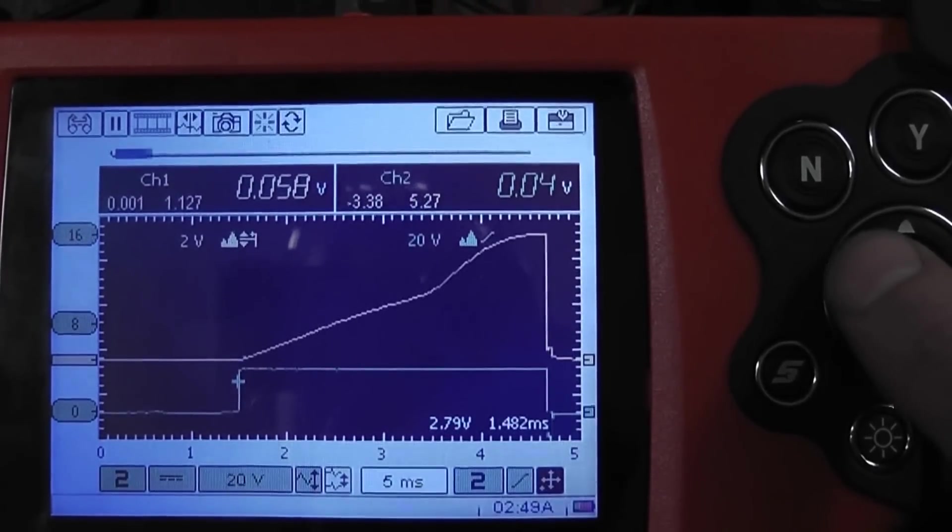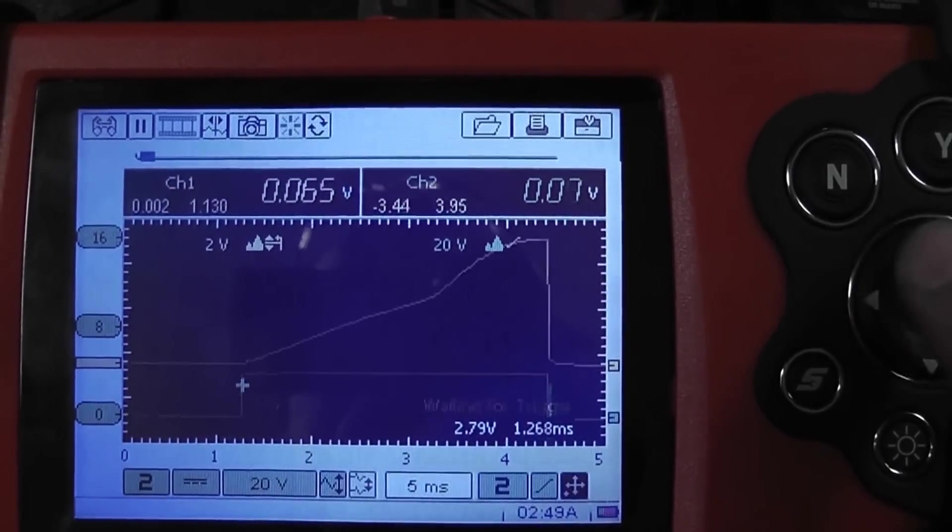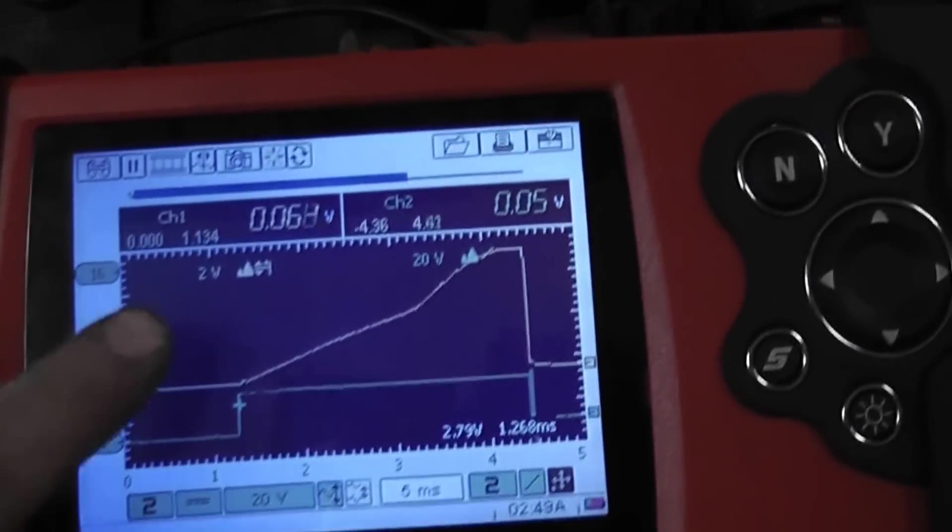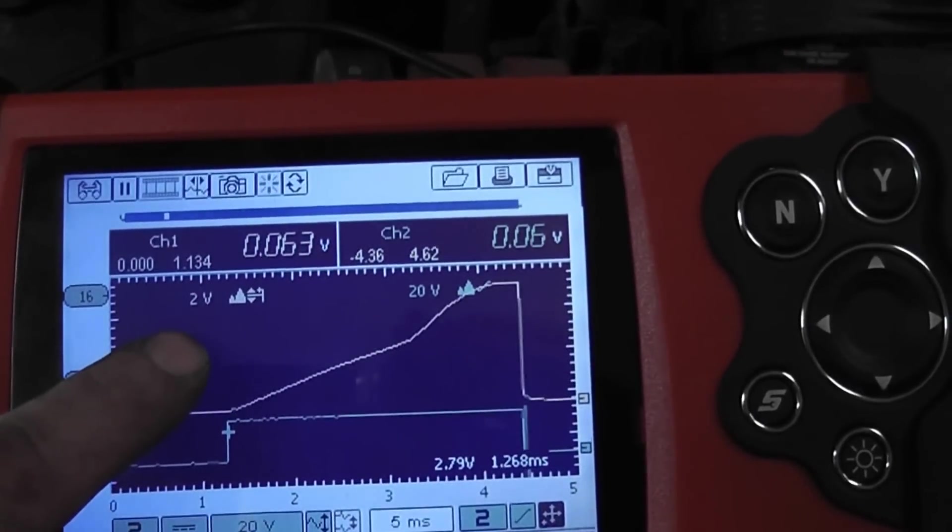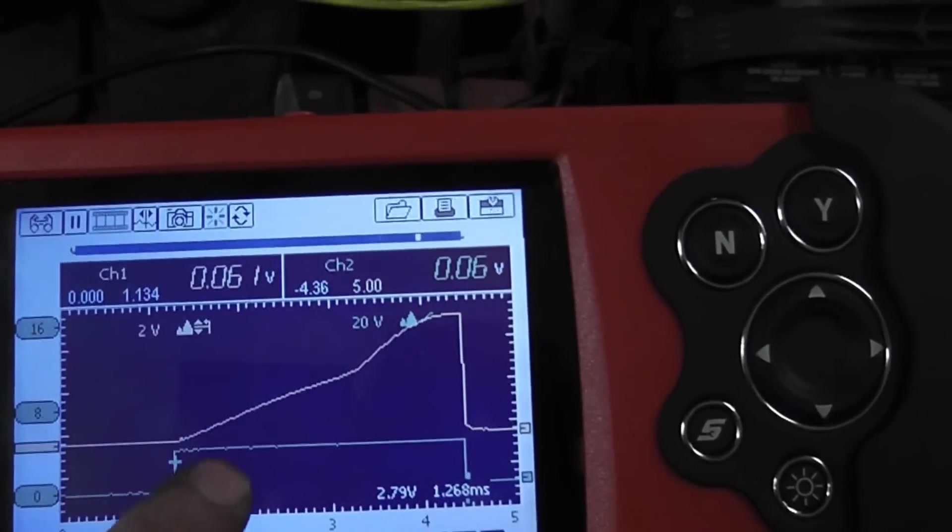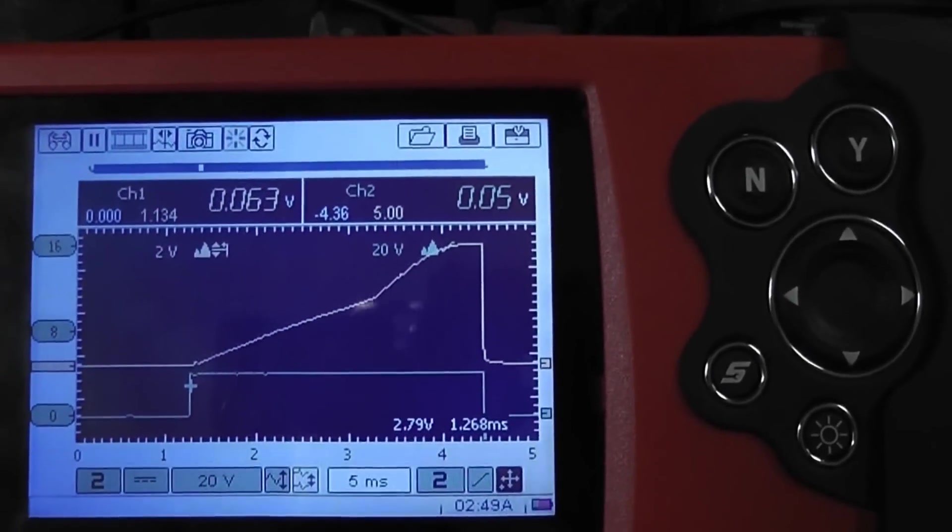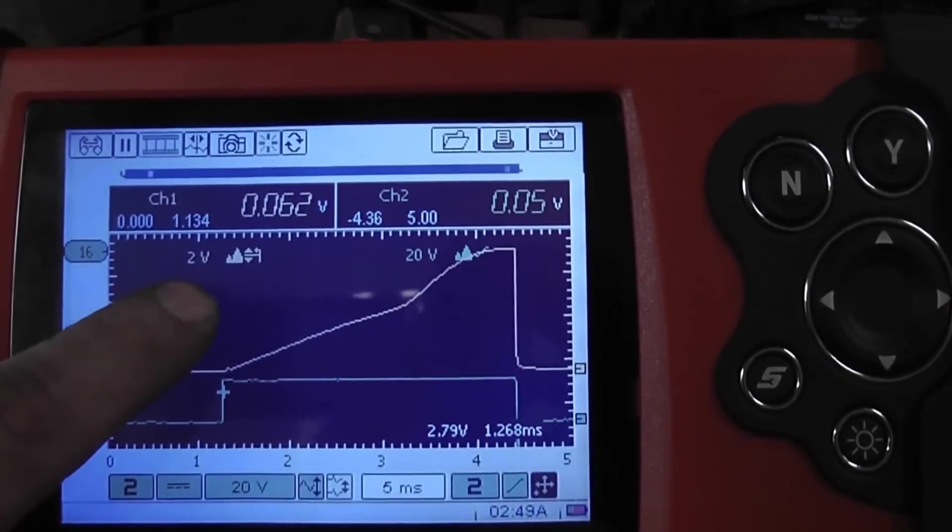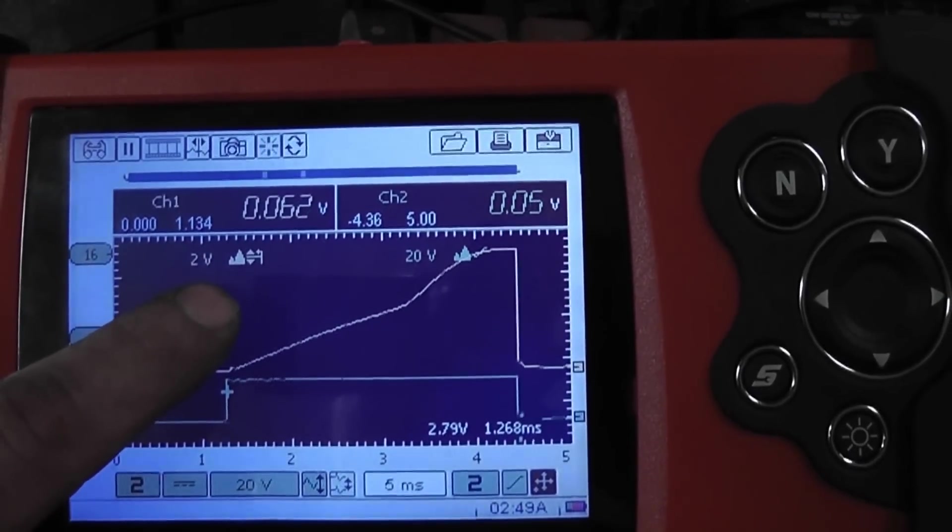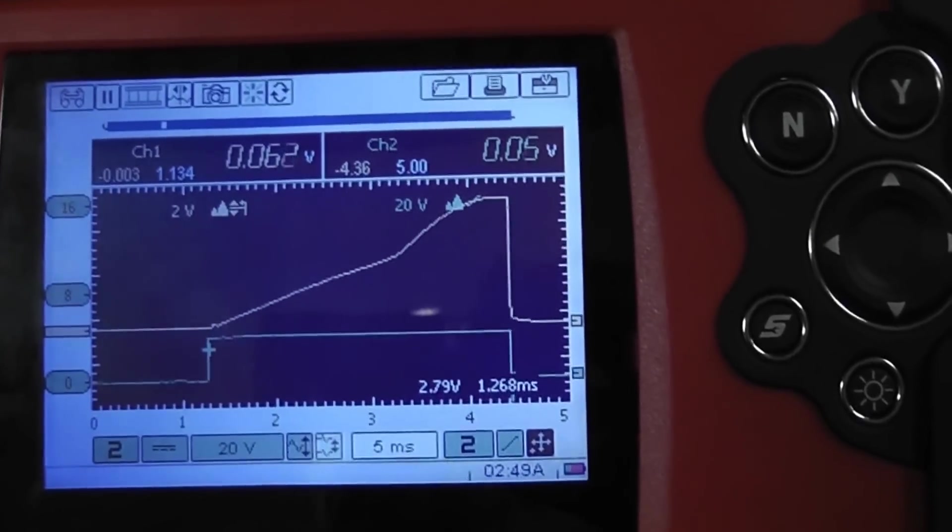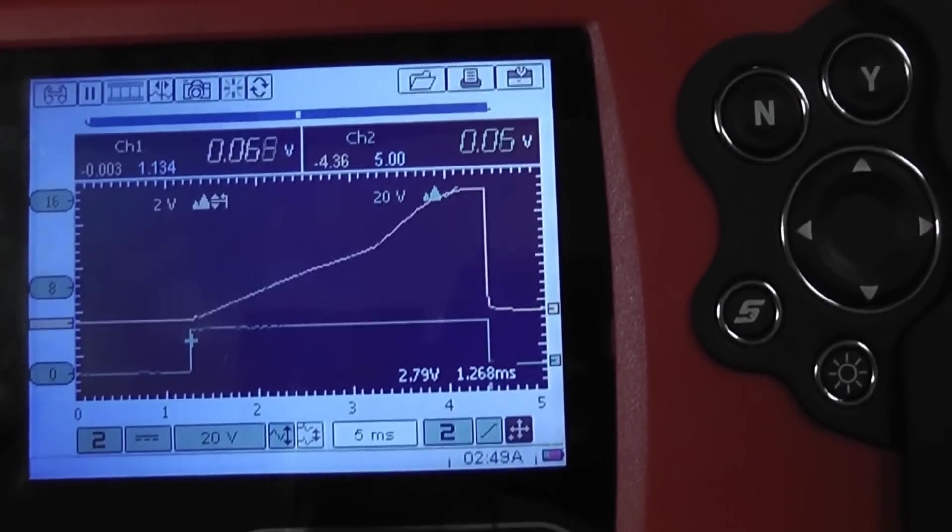We got some noise in this circuit which is interfering with this a little bit, but essentially what we've done with that setting is we've separated the coil firings out of all six and we're just looking at the number four right now. That's how you can use a trigger and how you can take six coil firing ramps and basically pull one out that you want to look at.